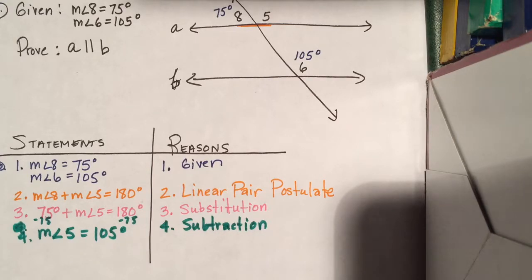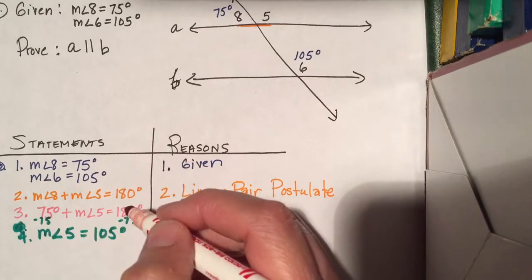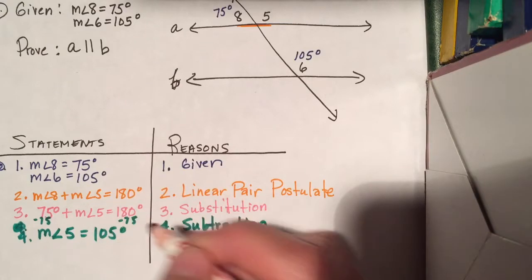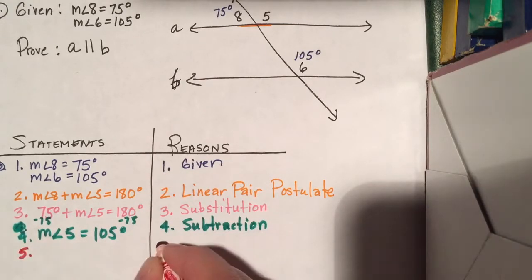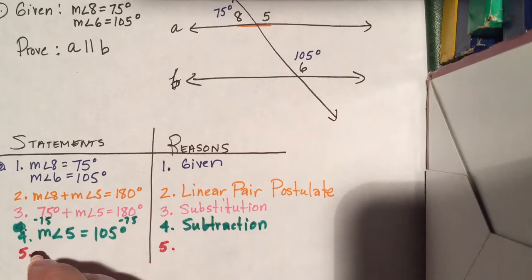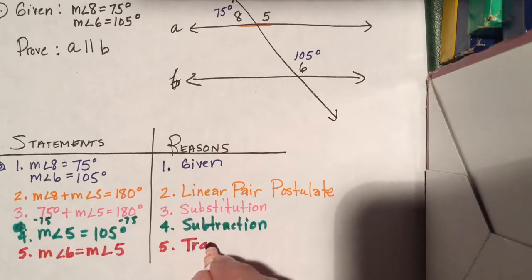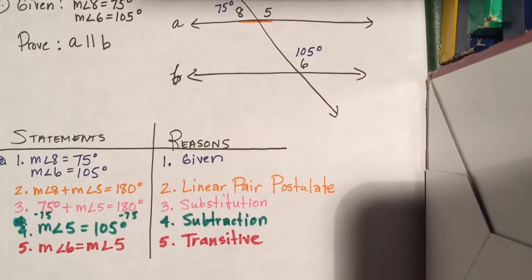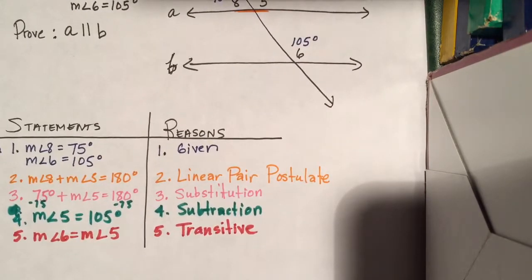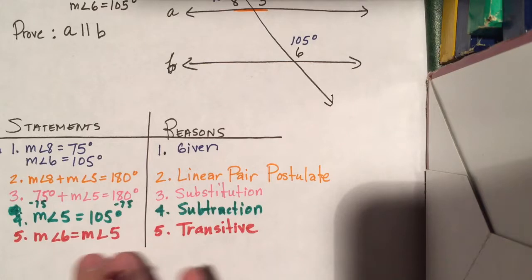Now I'm in a situation where I can make another statement. I know that the measure of angle 6 is 105 and the measure of angle 5 is 105. So, by the transitive property — if 6 is equal to 105 and 105 is equal to the measure of angle 5 — I can say that the measure of angle 6 is equal to the measure of angle 5 by the transitive property. We've established from the given that angle 6 is 105, and now we've established that angle 5 is 105, so they're equal.